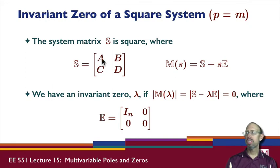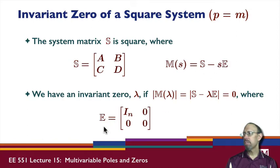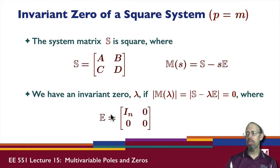We start with a square system — that is, the number of outputs equals the number of inputs. Our transfer function matrix is of dimension P by M. I define the system matrix, which in this case is square because we have the same number of inputs as outputs. So A, B, C, D forms a square matrix. I define the matrix E to be of this form — specifically a projection matrix, since if you multiply it by itself you get the same matrix back, and it's also symmetric.